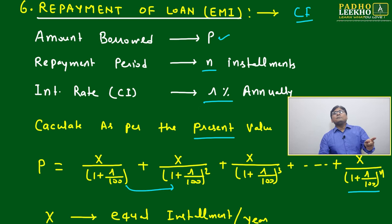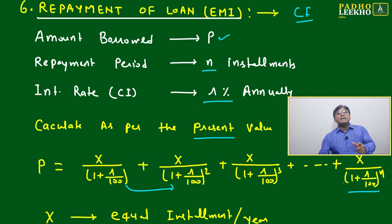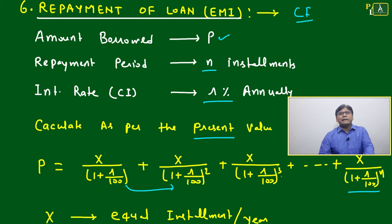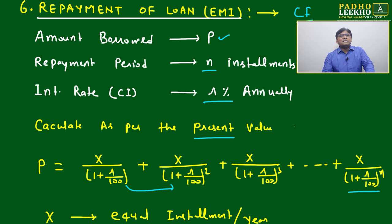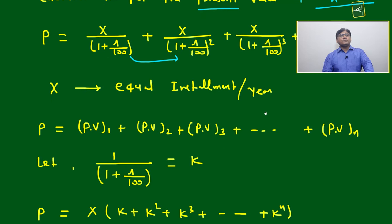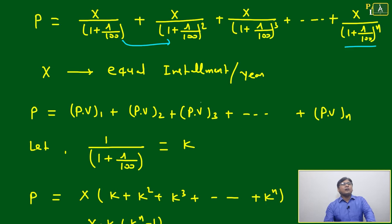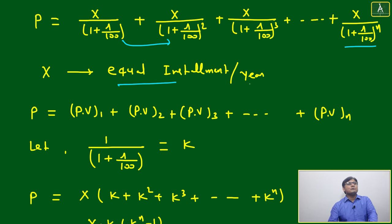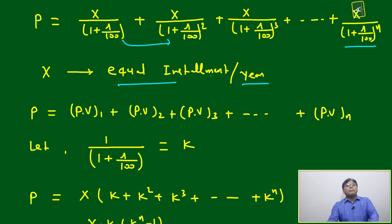The number of years changes for each installment: the last installment is applicable for only one year, the second last for two years, and the first for n years. That is how we find the present value — converting P by discounting x at r percent over n years. Adding all present values gives you the principal value. X is the equal installment, given annually.